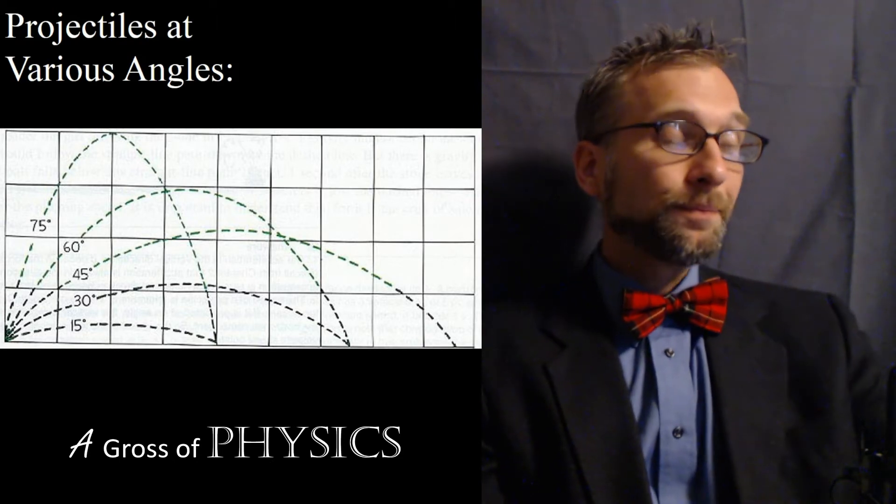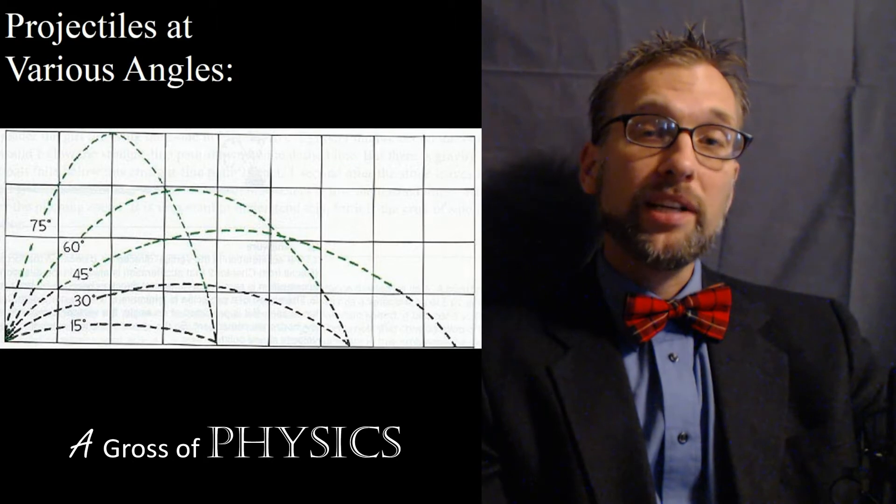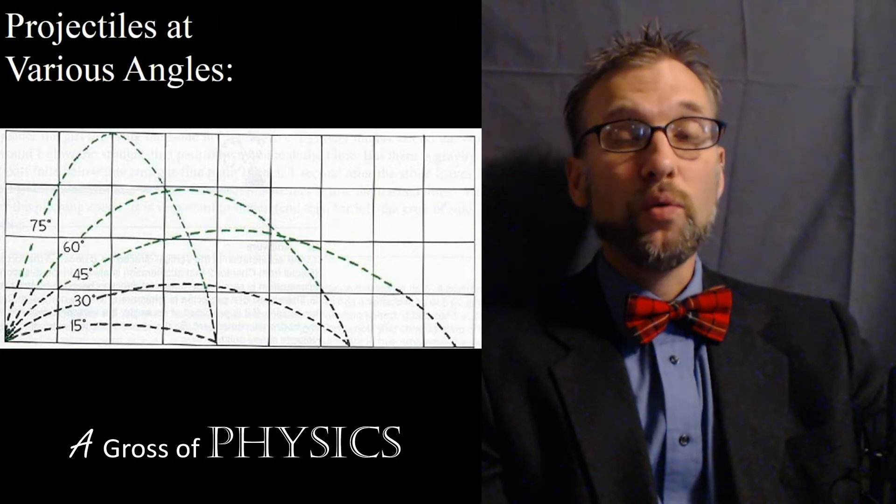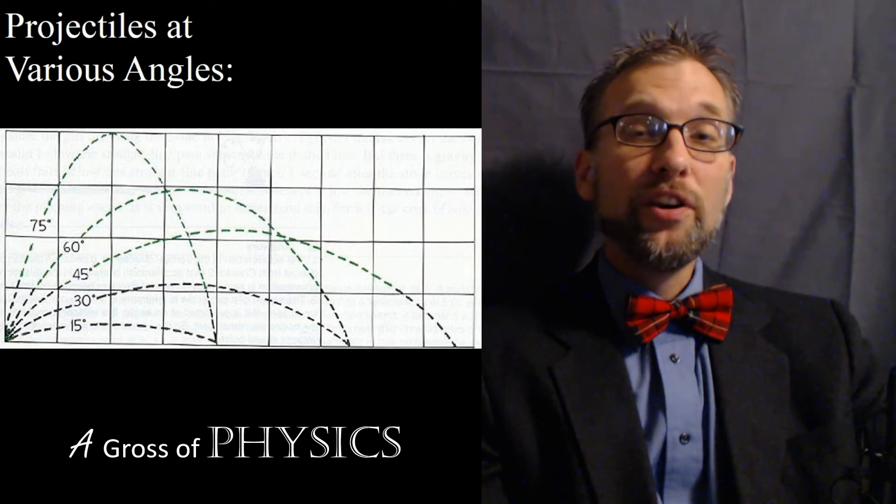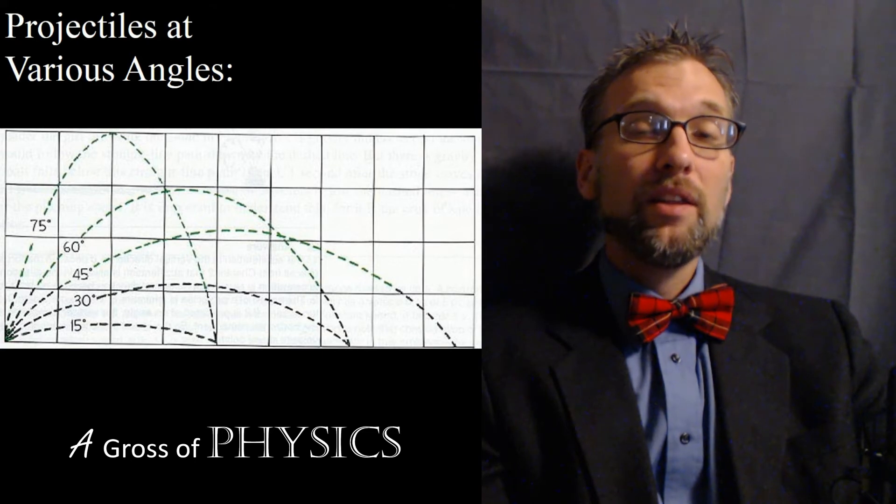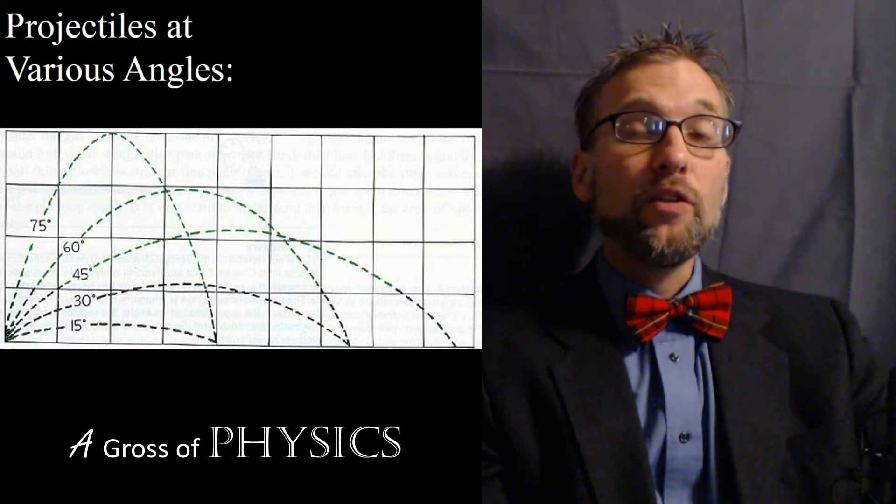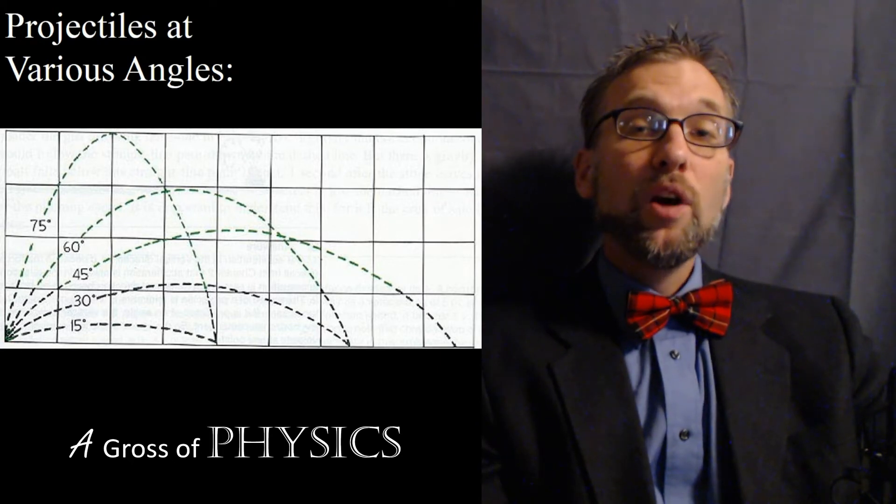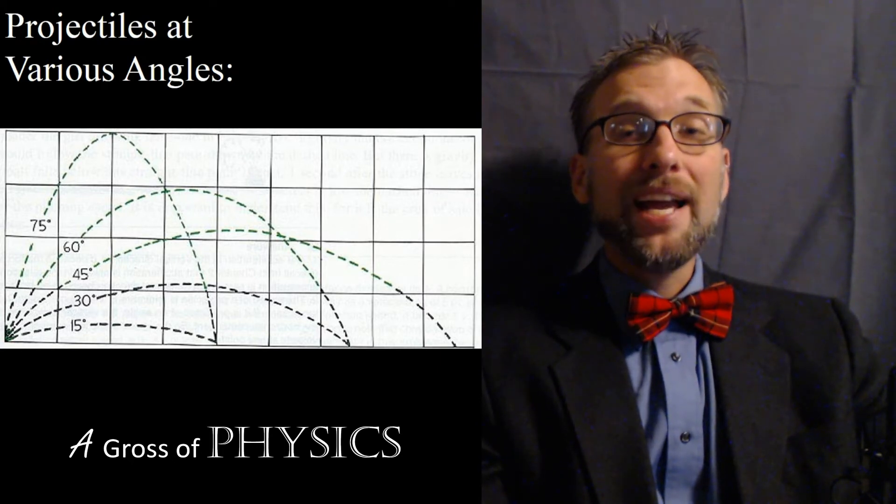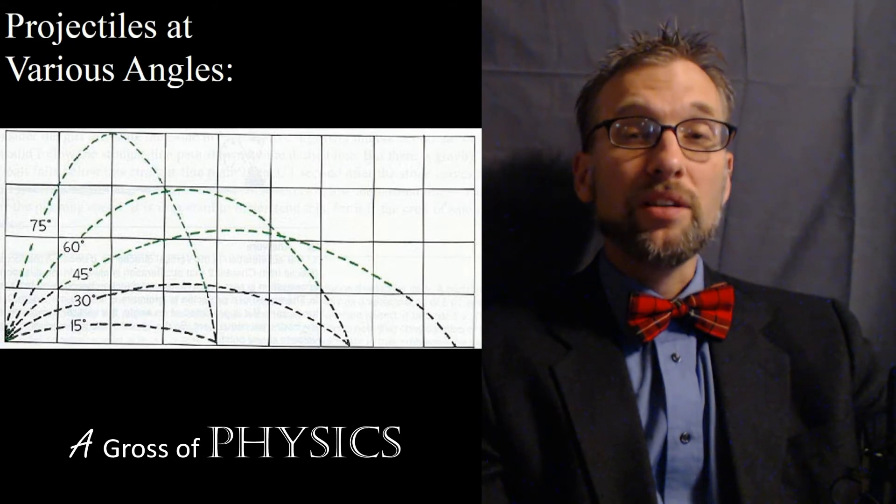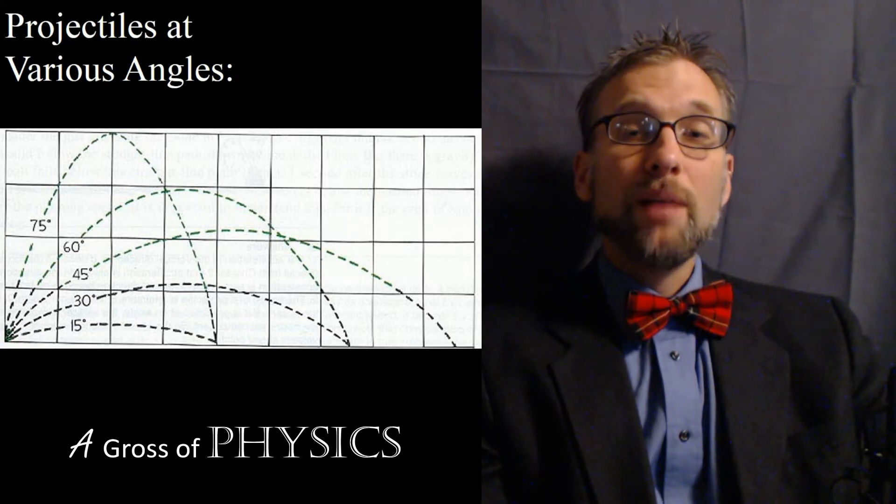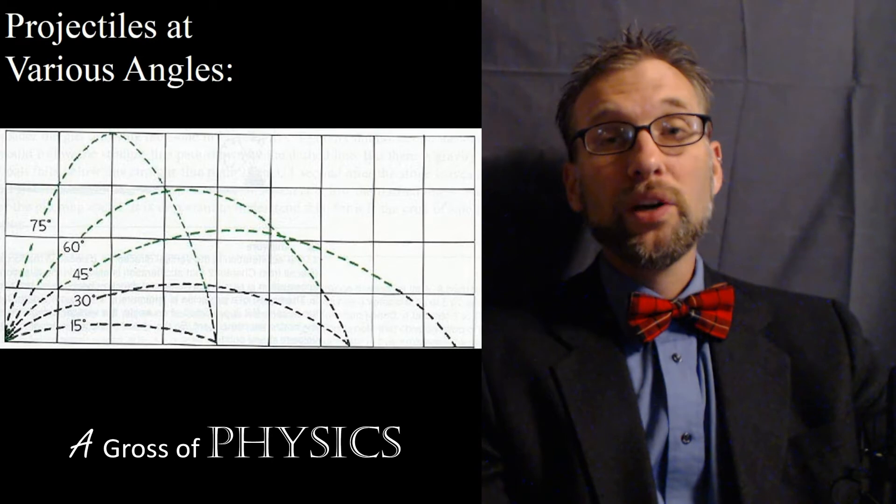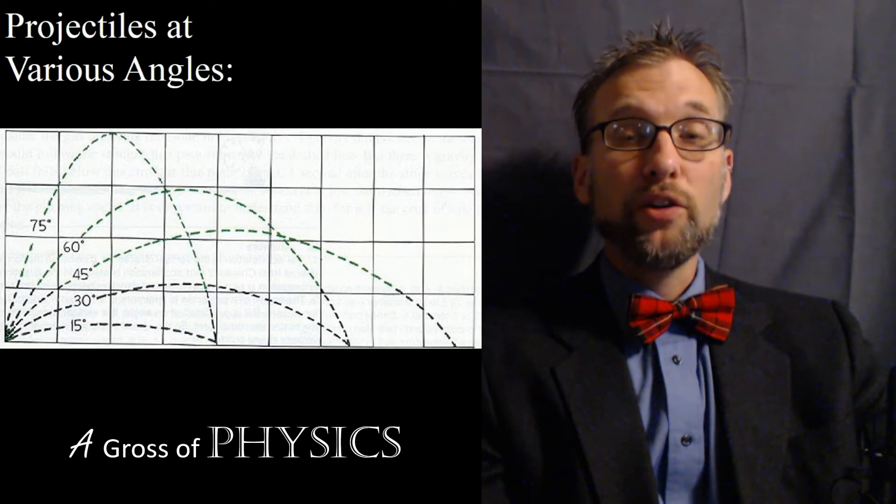The first being that the range of the projectile will increase as we go from 0 to 45 degrees. At 30 degrees, the range is less than 40 degrees. At 45, you have the biggest range you can possibly have. As we go from 45 up till 90, the range will decrease. So if we want to shoot an object as far as possible, what we're going to do is fire it at 45 degrees.